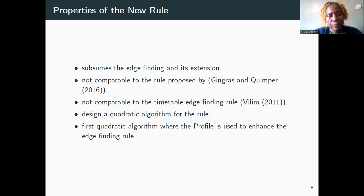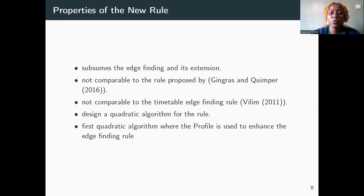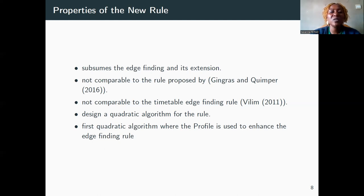What are the properties of this rule? The new rule subsumes the age-finding and its extensions. Therefore, its threshold filtering power is similar to the one of Gingras and Kimper. The new rule is not comparable to the rule proposed by Gingras and Kimper, and it is also not comparable to the timetable age-finding rule. It is possible to design a quadratic algorithm for this rule. The first step identifies the upper bound of the task interval of minimum slack and maximum density. The second step applies the rule proposed by Fetbo and Tayou on those intervals. In this paper, the first quadratic algorithm where the profile is used to enhance the age-finding rule is put forward.